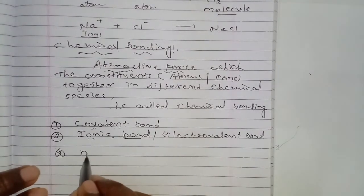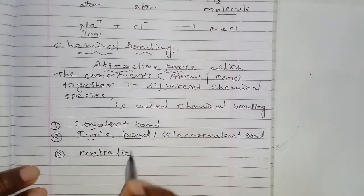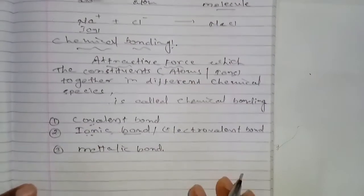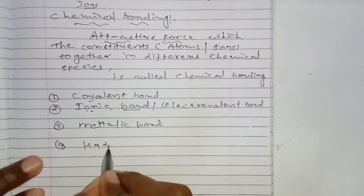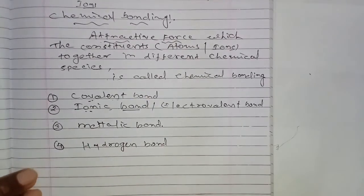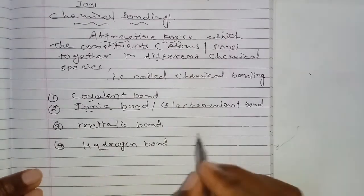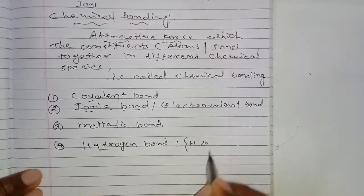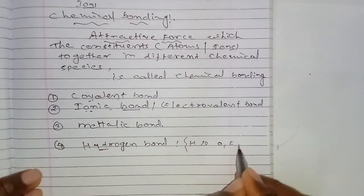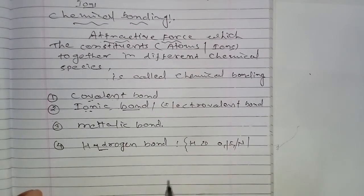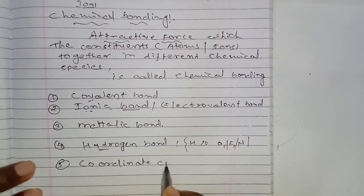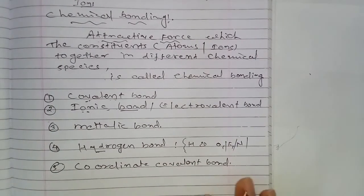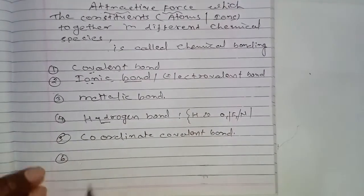The metallic bond is formed between metals. The hydrogen bond is formed between the hydrogen atom and highly electronegative atoms like oxygen, fluorine, and nitrogen. There is also the coordinate covalent bond.